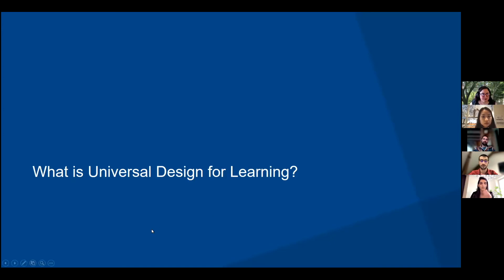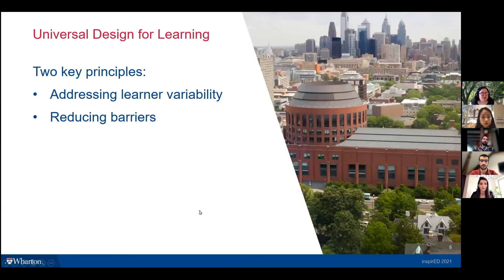Universal design for learning has two key principles. First, we want to address learner variability. And second, we want to reduce the barriers that learners have to the learning process. Those are the two key principles of UDL, and I'm going to talk about those in turn.